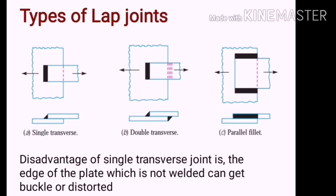The disadvantage of single transverse joint is that the edge of the plate, which is not welded, can get buckled or distorted.